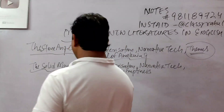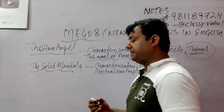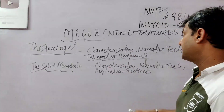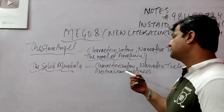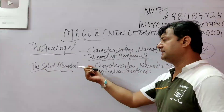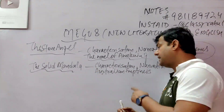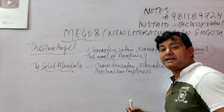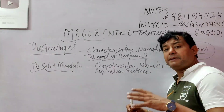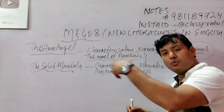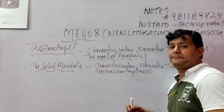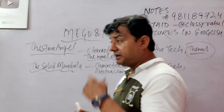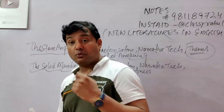So for The Solid Mandala the topics are: characterization and Australian emptiness. These will be highlighted. Jump to the next segment — that is really important.